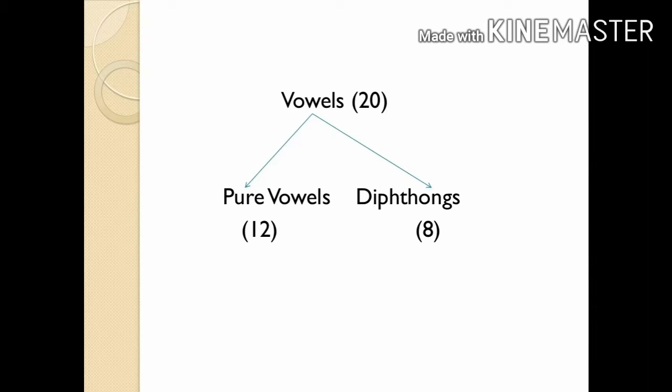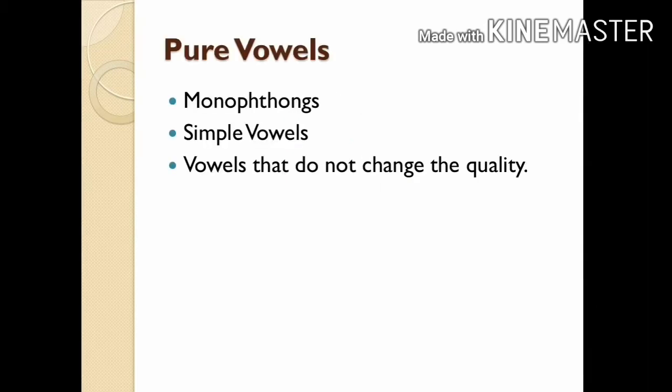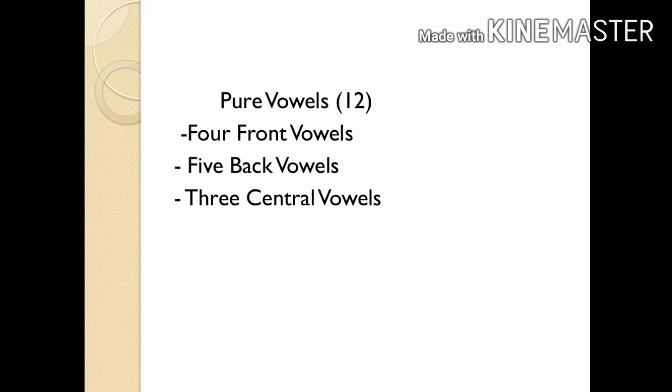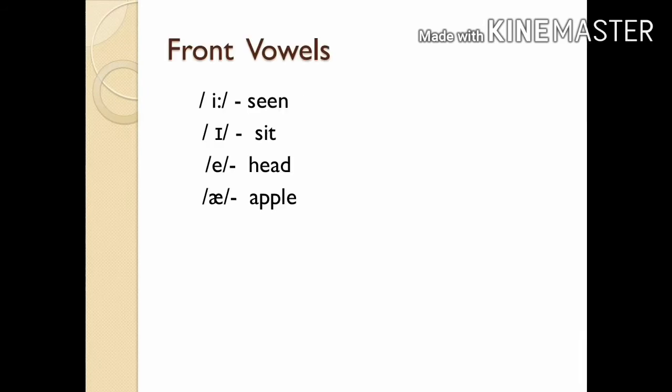Vowels of unchanging quality are called pure vowels, monophthongs, or simple vowels. There are 12 pure vowels or monophthongs in English RP. Out of these 12 pure vowels, there are 4 front vowels, 5 back vowels, and 3 central vowels.